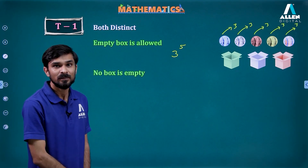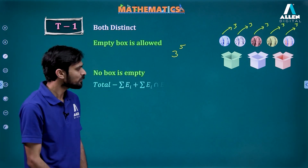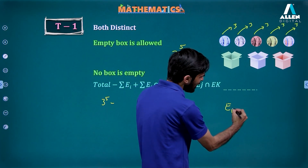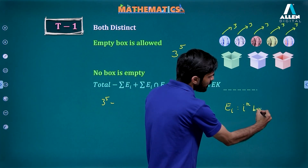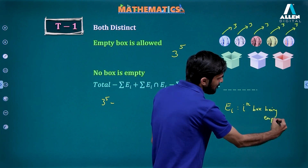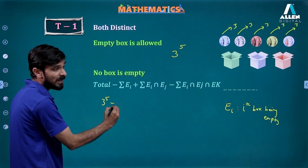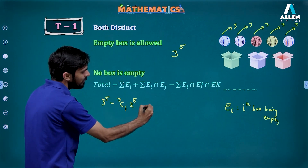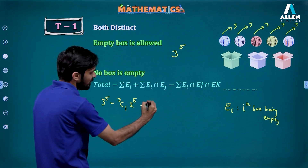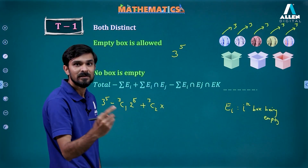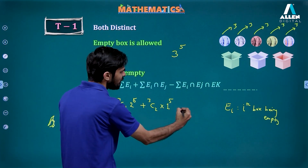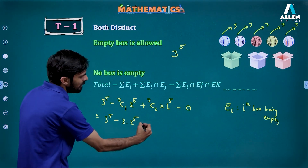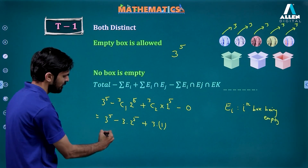When no box is empty, I'll have to use the principle of inclusion and exclusion. Total is 3^5, and EI means the ith box being empty. So: 3^5 minus 3C1 times 2^5 plus 3C2 times 1^5, and the next term is zero. This simplifies to 3^5 minus 3 times 2^5 plus 3 times 1.